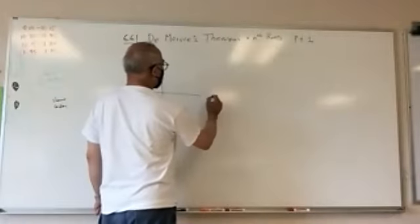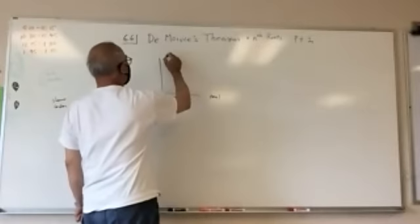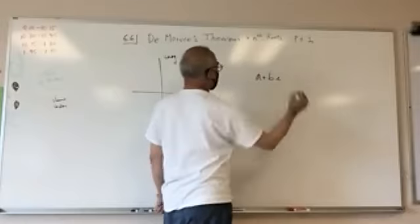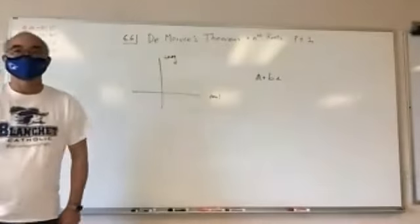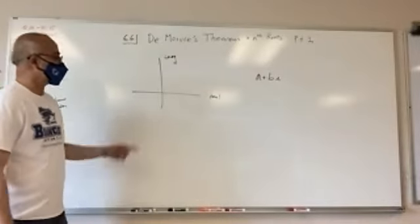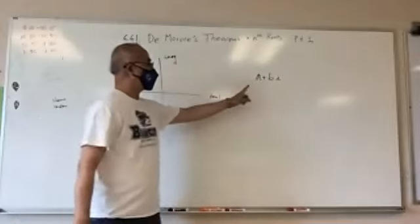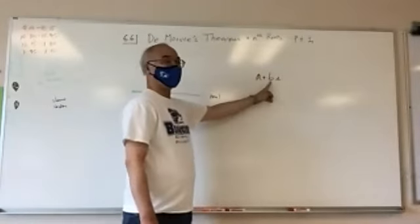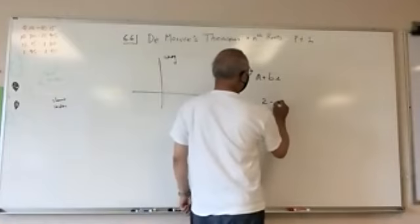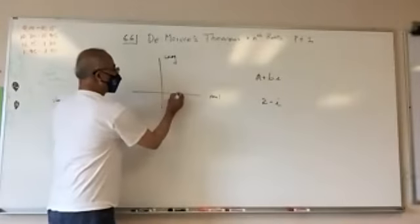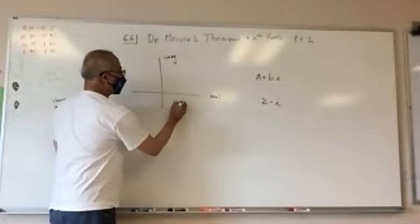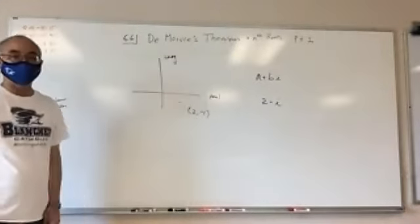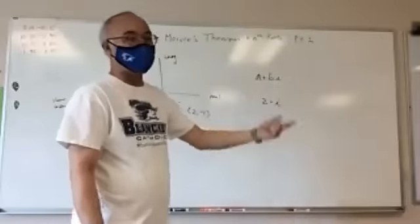This would be the real axis and this will be the imaginary axis, because a complex number, as we all know, looks like this: a plus bi. So the real and the imaginary. So if I had two minus i, that would be two and then down one — two minus one. This is the complex plane, complex numbers.